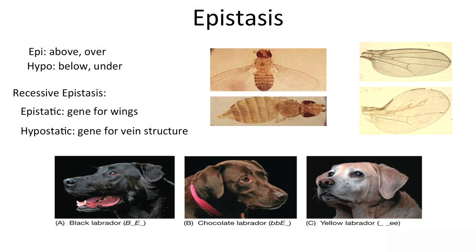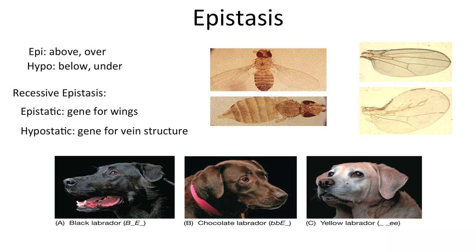Here's a fruit fly — a regular fruit fly with nice, well-shaped wings. There's a gene that codes for whether or not you have well-shaped or no wings at all. There's a mutation that occurs where when you're homozygous recessive for that gene, you don't make wings at all. That is the epistatic gene — the gene for whether you're going to make wings or no wings.